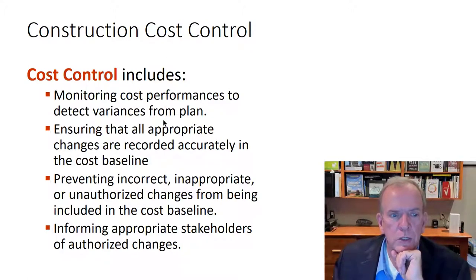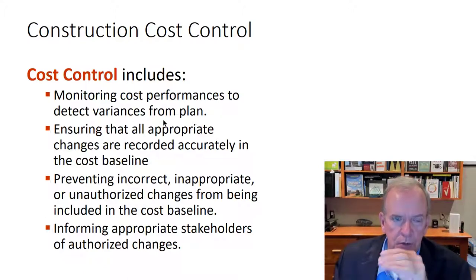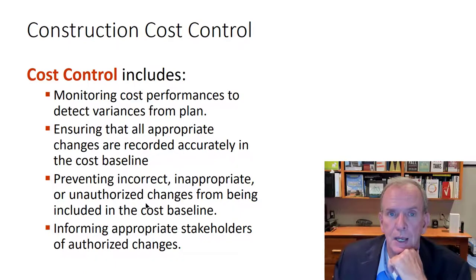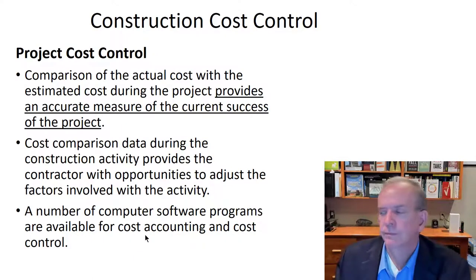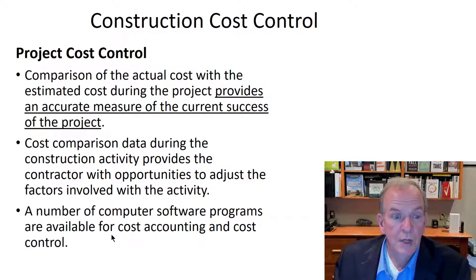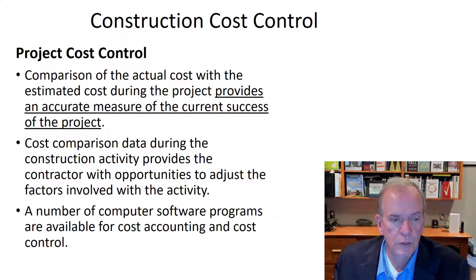Ensuring that all appropriate changes are recorded accurately in the cost baseline is critical. Prevent incorrect or unauthorized changes, and make sure that when we do have changes they're accounted for properly, brought into the budget, and that we're compensated for them properly. Doing comparisons, watching variances, doing recoveries, getting budgets back on track, and keeping data for future opportunities ensures we don't make the same mistake twice and builds our database really well.